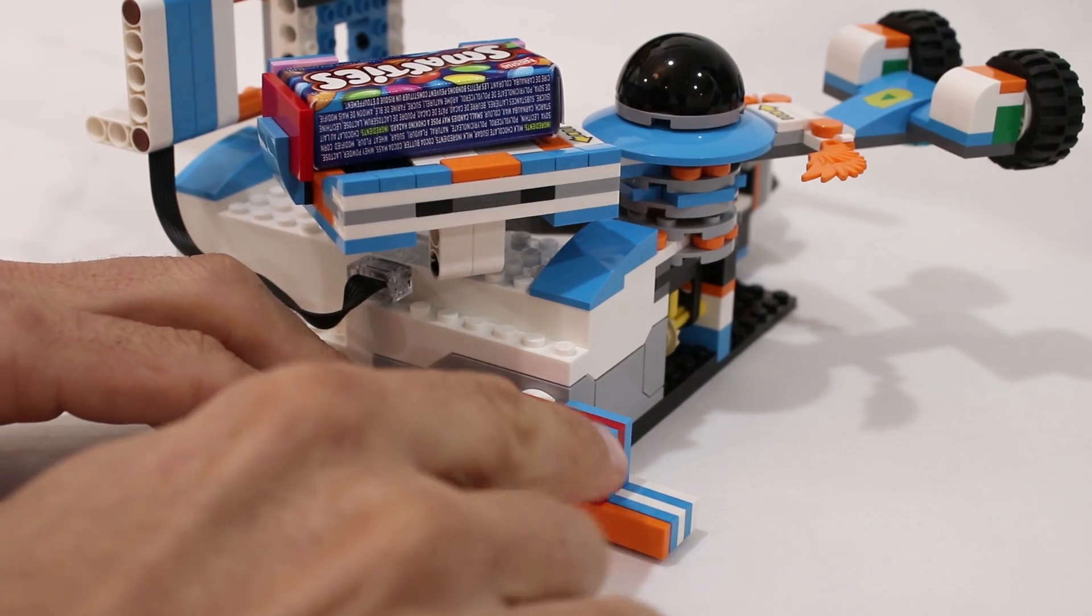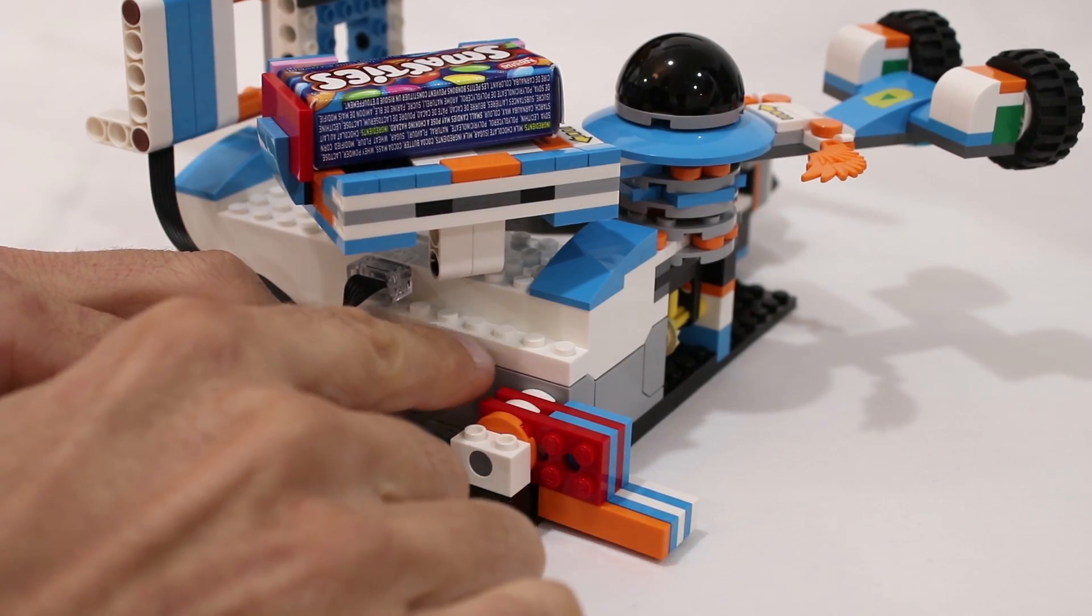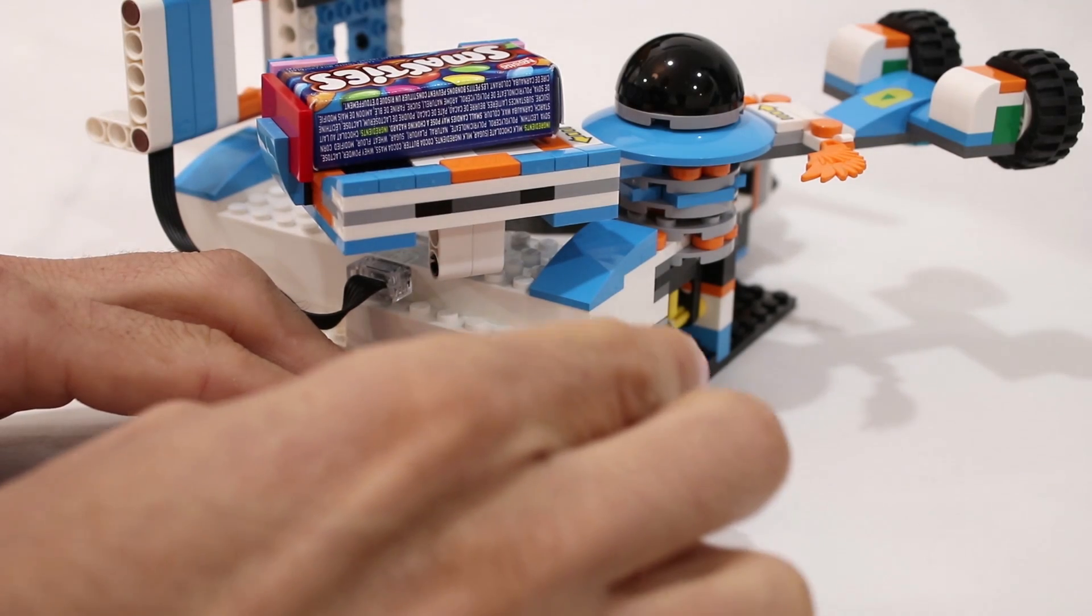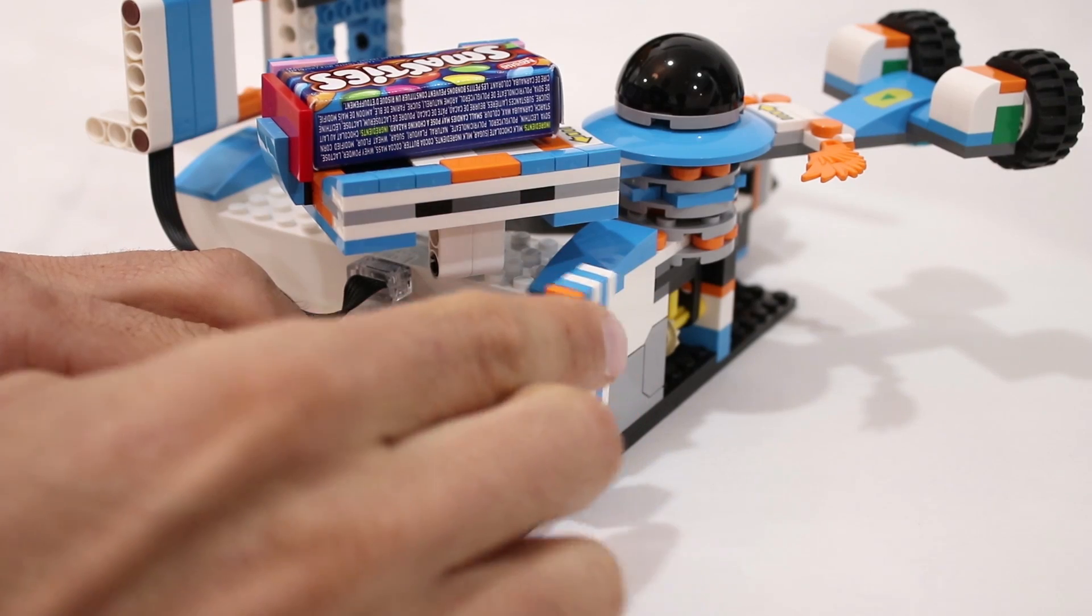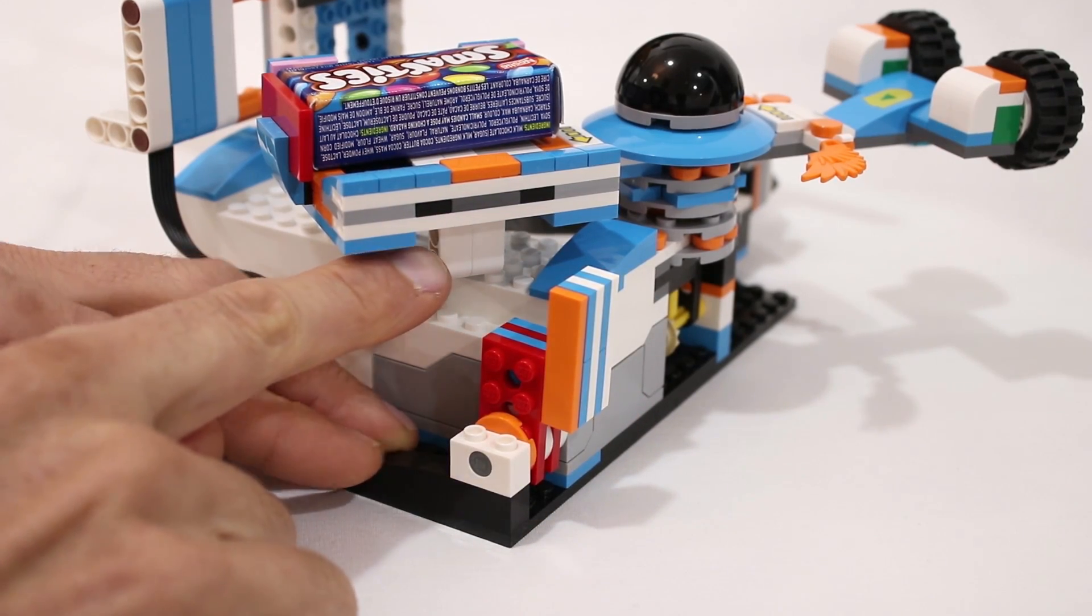And to do that, we have this small arm here, driven by the other internal motor of the hub, that can be raised and lowered. And when it's up, it is right in the path of those lift arms.